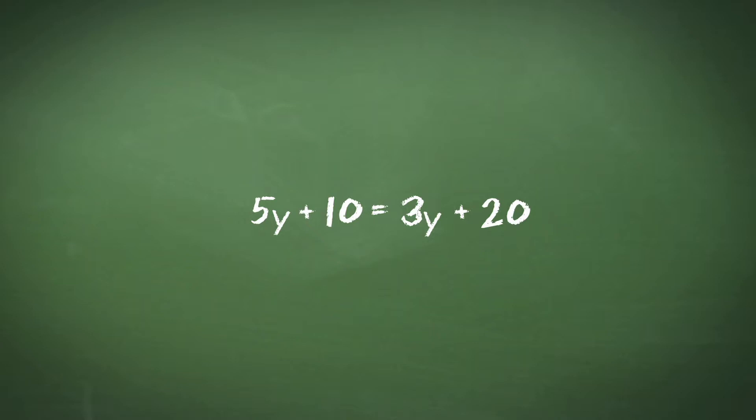So with this equation, we can start by getting all the y's together. Now it doesn't actually matter which side of the equation you get the y's on, as you'll always come to the same answer if you follow the correct procedure. However, you might find it a little easier if you keep the y's positive, so it's usually best to subtract the smallest number of y's from the largest number. In this case, subtracting the 3y from the 5y, like this.